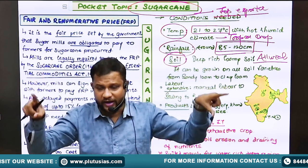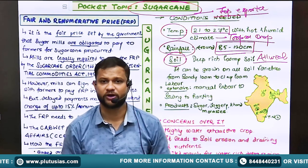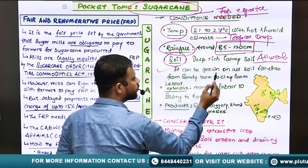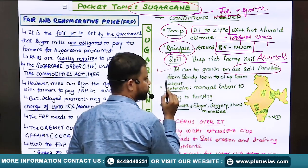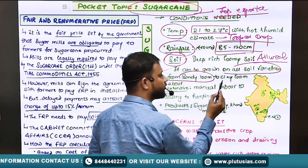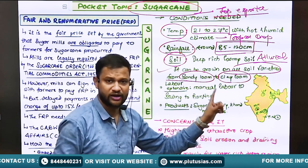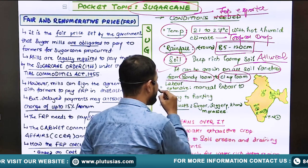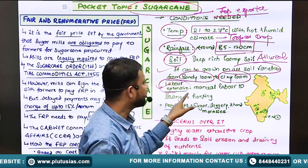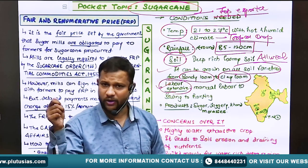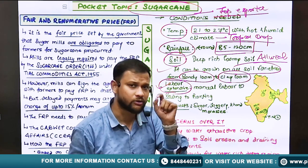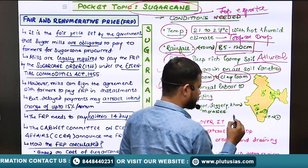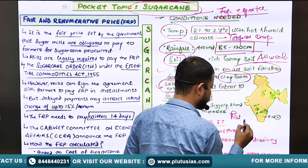Sugarcane requires very specific conditions for its production and cultivation. However, it can be grown on all soil varieties from sandy loamy to clay loamy as well, since with modern hybrid varieties you can grow it on all types. This crop is also labor-extensive — it requires extensive labor for the purpose of harvesting.